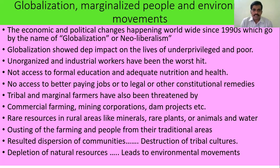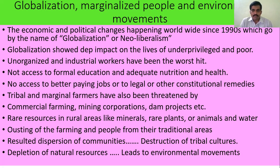Particularly, unorganized and industrial workers have been the worst hit. These people don't have access to formal education, adequate nutrition, and health. Because they lack adequate nutritional and health facilities, they don't have access to better paying jobs or to legal or other constitutional remedies. Tribal and marginal farmers — farmers who are having very low land — have also been threatened by commercial farming, mining corporations, and dam projects.